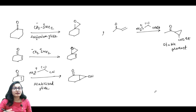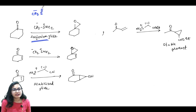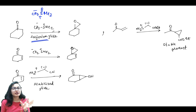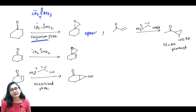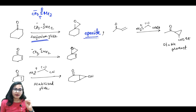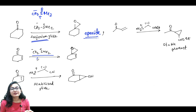When there is only a simple carbonyl, both sulfonium and sulfoxonium ylides give the same product — epoxide formation. The selectivity difference appears with alpha-beta unsaturated ketones. With an enone, the sulfonium ylide (without oxygen) does 1,2-addition, attacking the carbonyl directly, giving the epoxide.